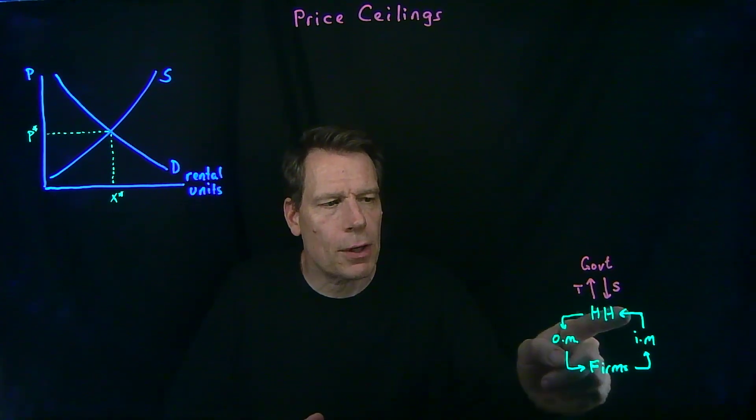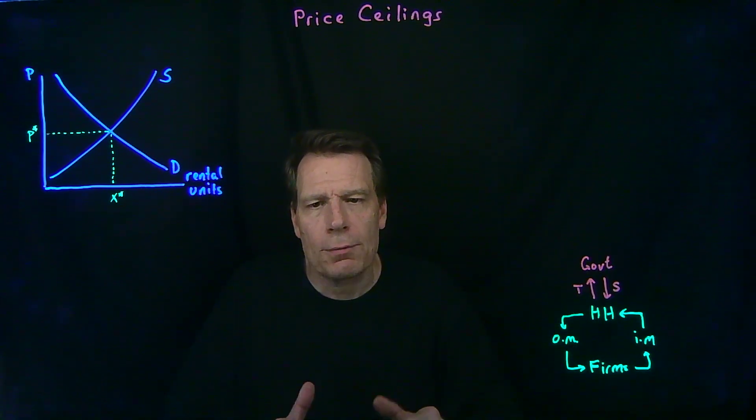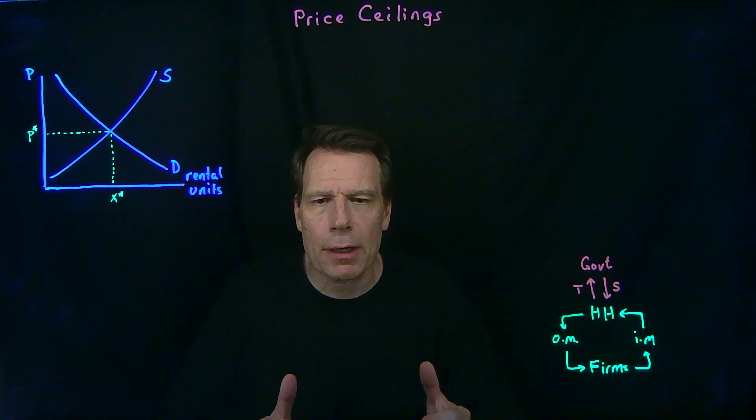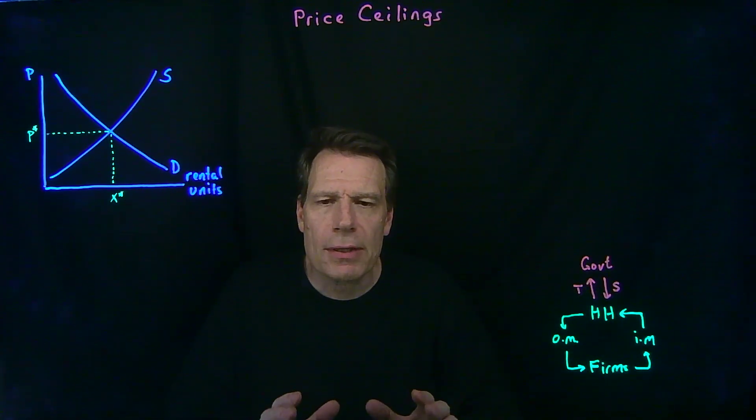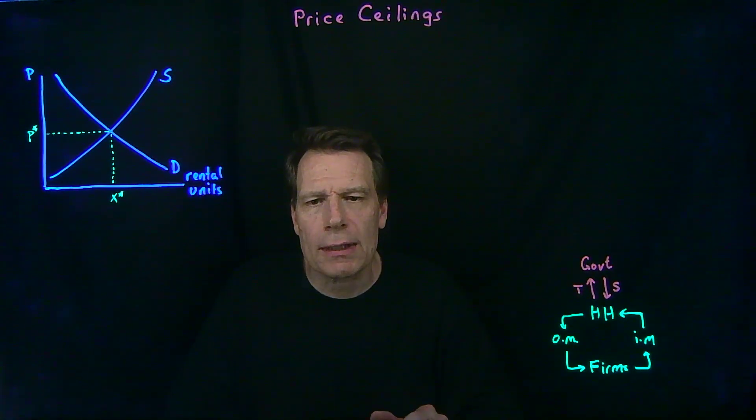We've now introduced the government into our circular flow diagram, and we've shown how governments can distort market prices through taxes and subsidies. But there's another way in which governments can distort market prices, and that is by directly regulating them.